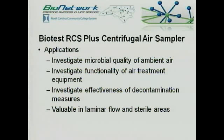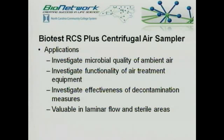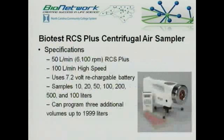Now let's look at a centrifugal air sampler. Centrifugal air samplers are used for sampling viable—living—contaminants within the air. This particular RCS Plus centrifugal air sampler has many applications: we can use it to investigate the microbial quality of air in our working environment, evaluate how effective our air treatment equipment and HVAC filtration are, determine how effective our decontamination procedures are, and evaluate air quality in laminar flow hoods, rooms, or any sterile area.